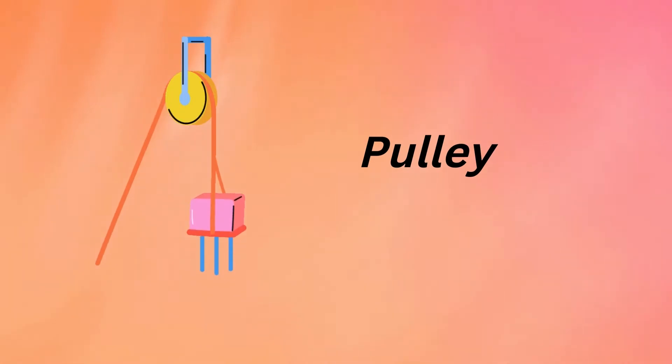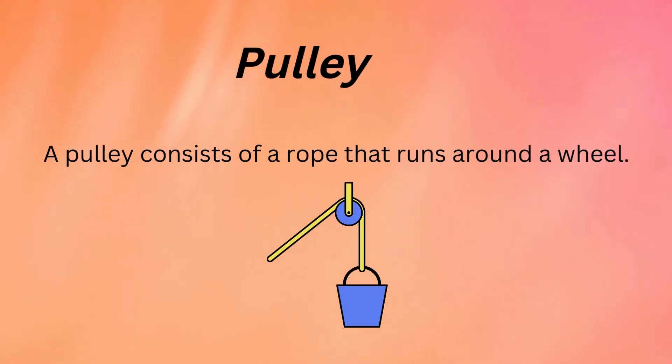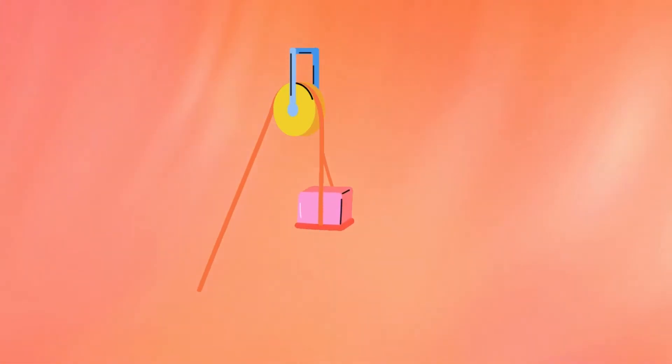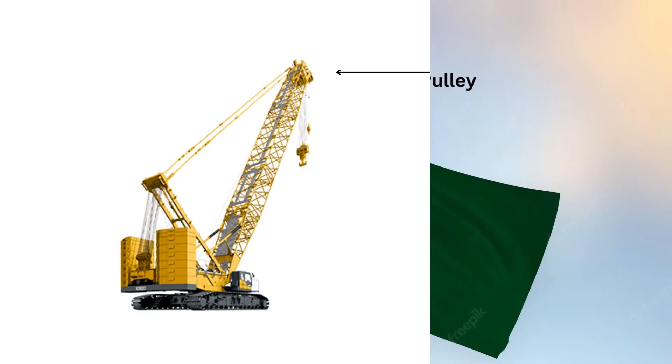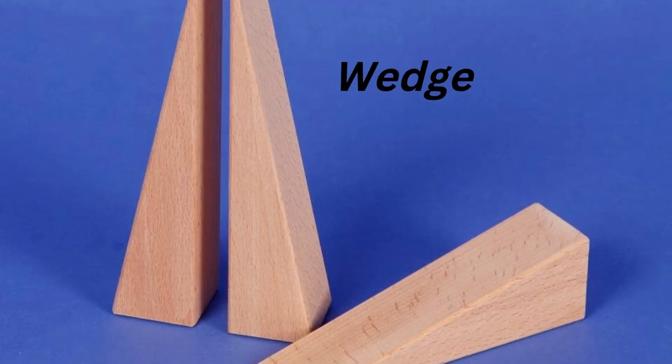The next simple machine is a pulley. A pulley consists of a rope that runs around a wheel. It is used to lift objects upwards. One end of the rope is attached to the load. Force is applied to the other end of the pulley to lift the load. Pulleys are used in wells, cranes, and flagpoles.